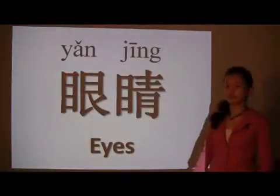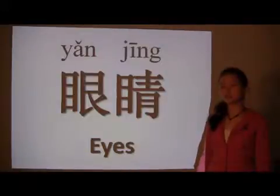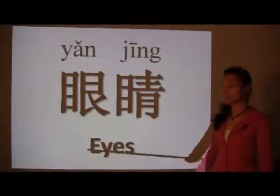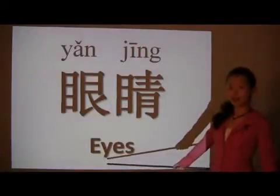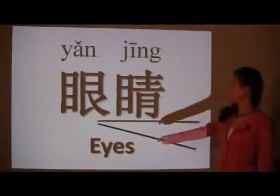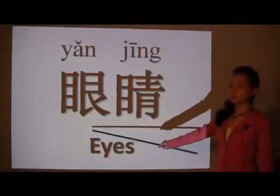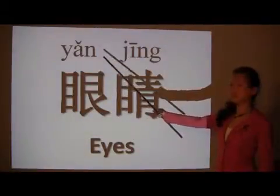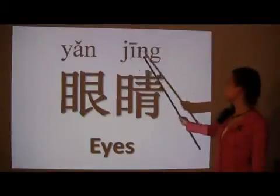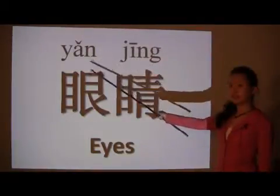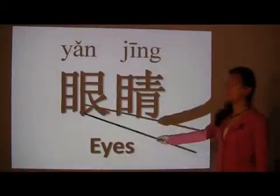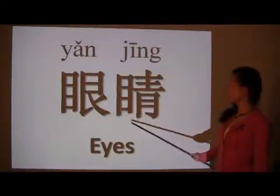Something that we see out of, and that's very important for us — we use it to analyze the world around us all the time — are our eyes. So, two eyes, two characters. 眼睛. 眼睛. 眼睛. For eyes.